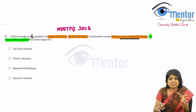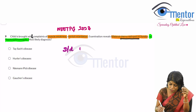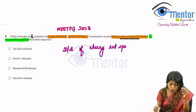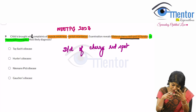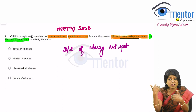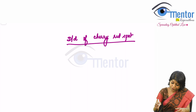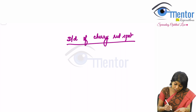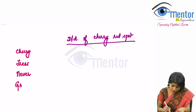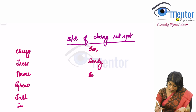To answer this question, you need to know the differential diagnosis of cherry red spot. Looking at the options — Tay-Sachs disease, Niemann-Pick disease, Gaucher's, and Hurler's — almost all four can present with a cherry red spot. The mnemonic for the differentials is: 'Cherry Trees Never Grow Tall In Far Sandy Soil And Mud.'